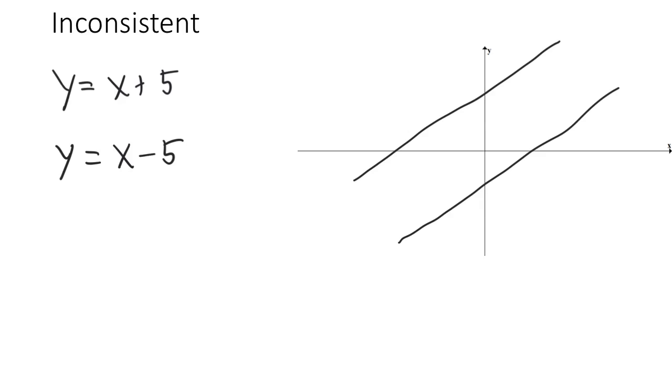So what does that mean about their solution? A solution would correspond to a point of intersection. Parallel lines never intersect. And so what we would conclude in this case is that this system has no solution. A system that has no solution is called inconsistent.